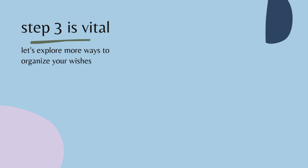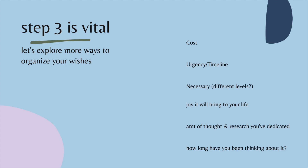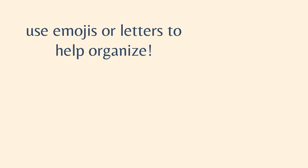I wanted to talk about step three again — organizing and prioritizing your wish list — because for me it's the most vital step. You can think about the cost, the urgency and timeline, and the relation of that urgency and timeline to the cost. If you're saving up for a grand vacation to Bora Bora that's going to cost $6,000, depending on your income, you're not going to be able to save for that in just a couple of months — it might take half a year, a year, or more. You also want to think about necessity, ranking needs by importance and wants by how much you actually want them. You can also categorize based on how much research you've dedicated and how long you've been thinking about it.